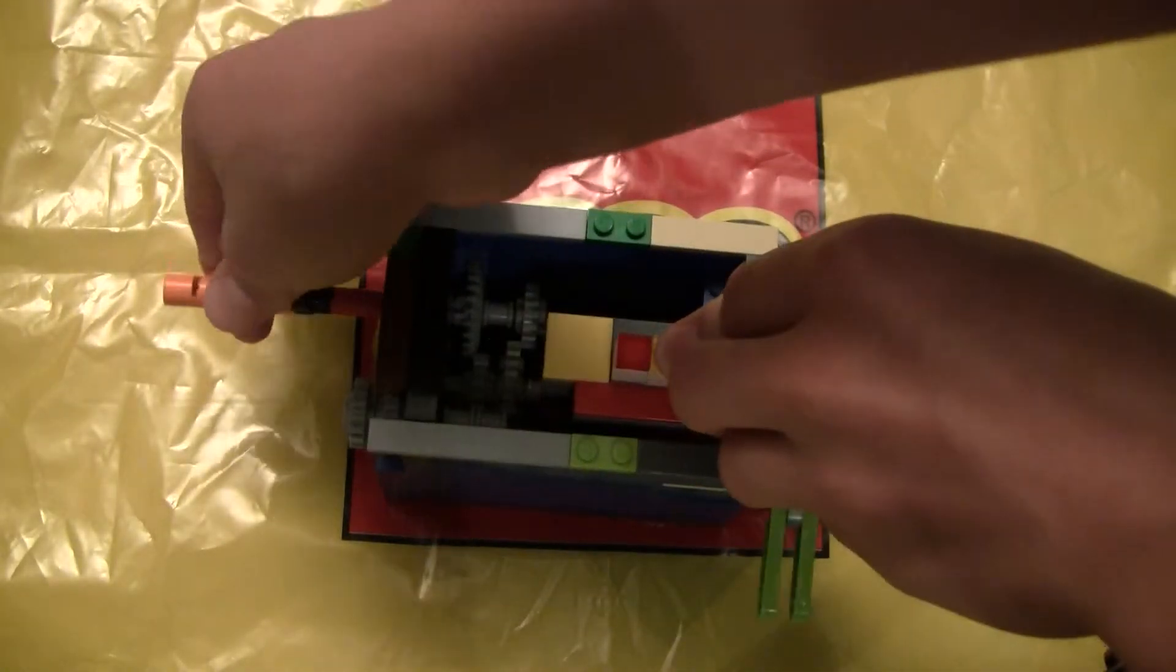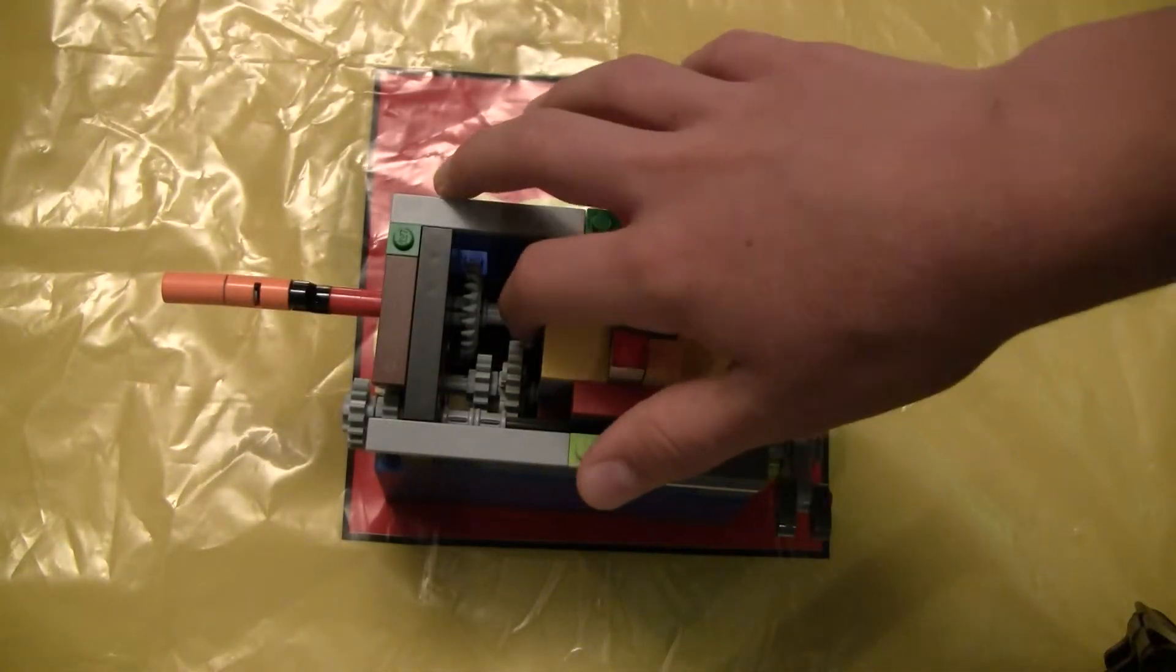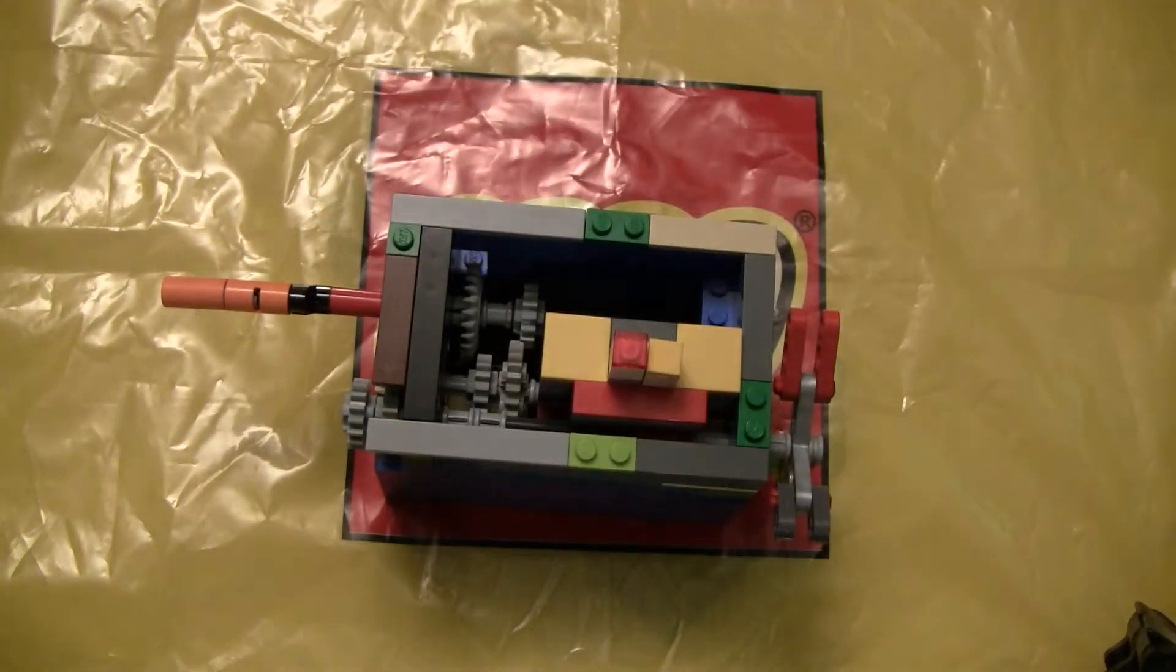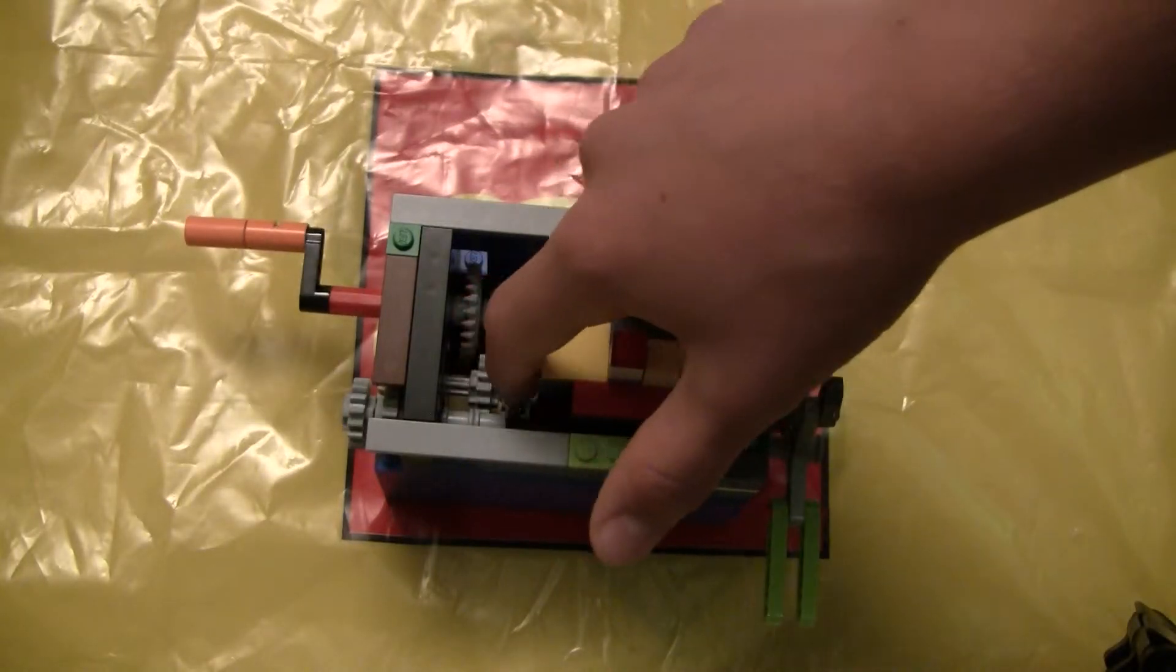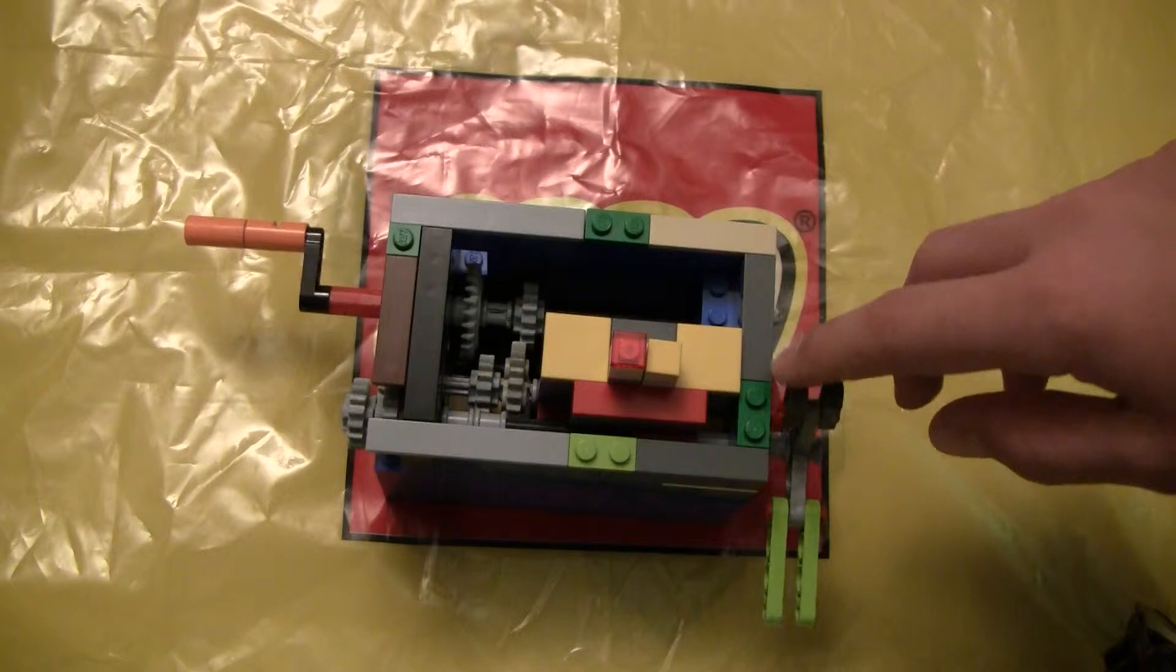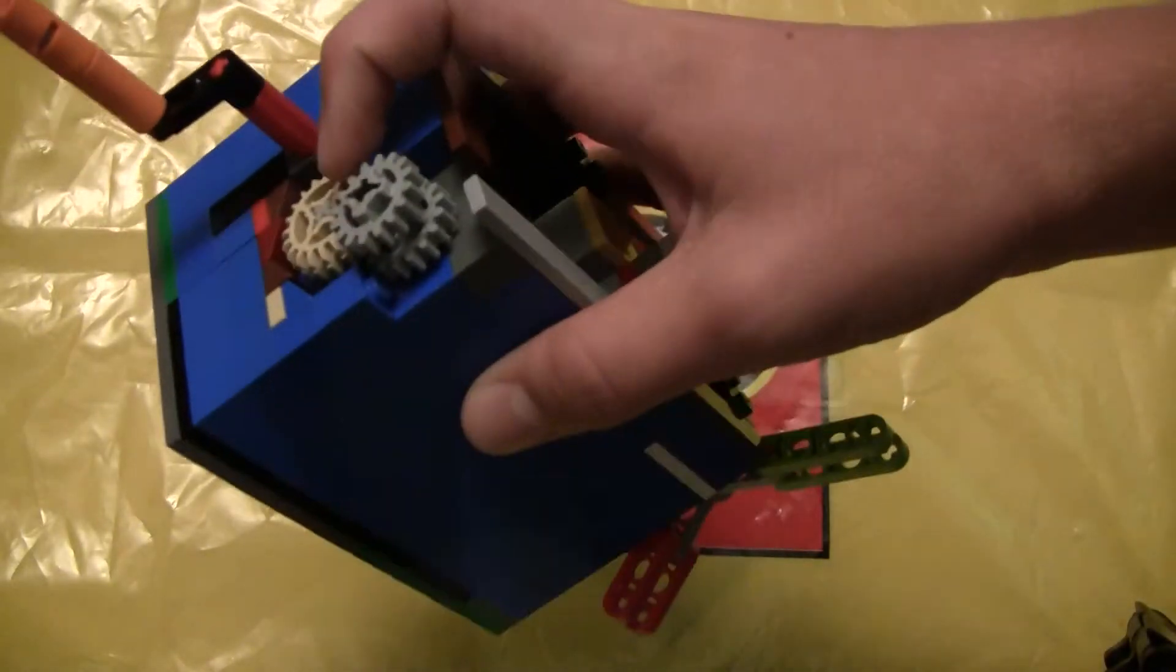But when I switch it, the small gear comes into contact with the big gear which makes it go slower. The axle that has these two gears transfers to the axle that has the fan on it through the gears on the side here.